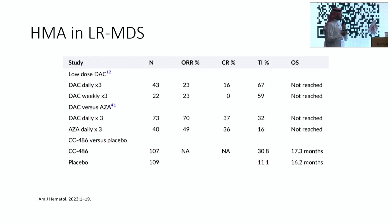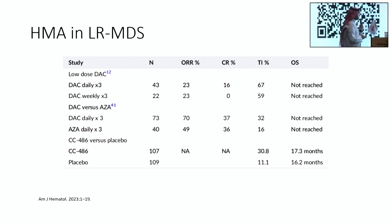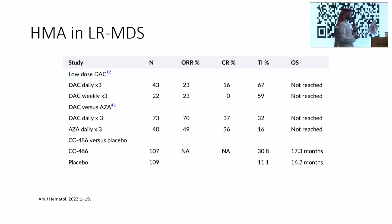Regarding the use of hypomethylating agents, low-dose HMA has been evaluated for patients with low-risk MDS, especially those who failed erythropoietin therapy or with low platelet count. Multiple studies were done with different combinations and durations. Low-dose decitabine in different schedules showed some complete remissions and transfusion independence up to 60%. Decitabine versus azacitidine for three days also showed CRs and transfusion independence. More recently, oral azacitidine approved for AML maintenance was studied, with around 30% of patients achieving transfusion freedom versus 11% in the placebo group.